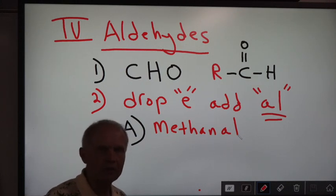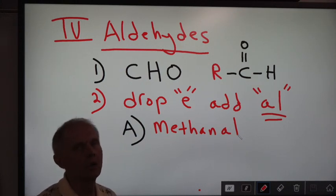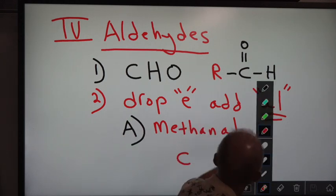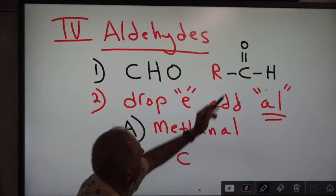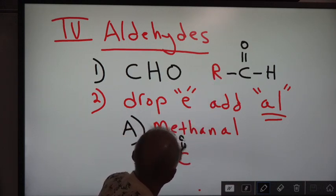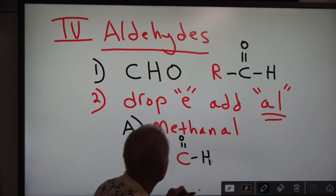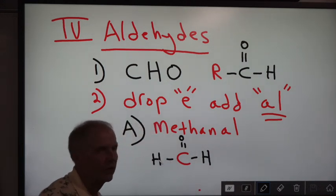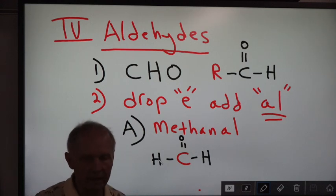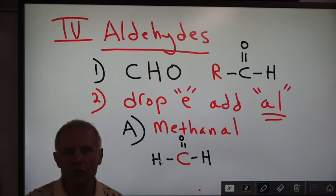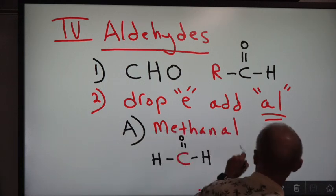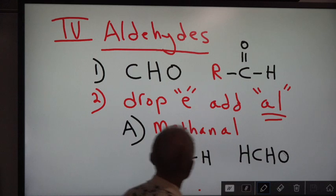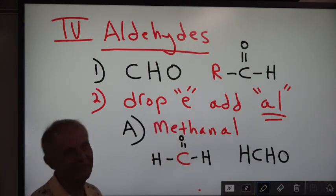What's the structural formula for methanal? Meth means one carbon — there's one carbon — then we have a double-bonded O at the top and an H here. That's three bonds, so we need another H. The molecular formula is HCHO.